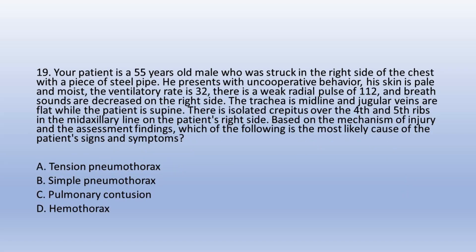Question 19. Your patient is a 55-year-old male struck in the right side of the chest with a steel pipe. He presents with uncooperative behavior, pale and moist skin, ventilatory rate of 32, weak radial pulse of 112, and decreased breath sounds on the right side. The trachea is midline, jugular veins are flat while supine, and there is isolated crepitus over the fourth and fifth ribs in the midaxillary line on the right. The most likely cause is: A. Tension pneumothorax, B. Simple pneumothorax, C. Pulmonary contusion, D. Hemothorax. The answer is D. Hemothorax.